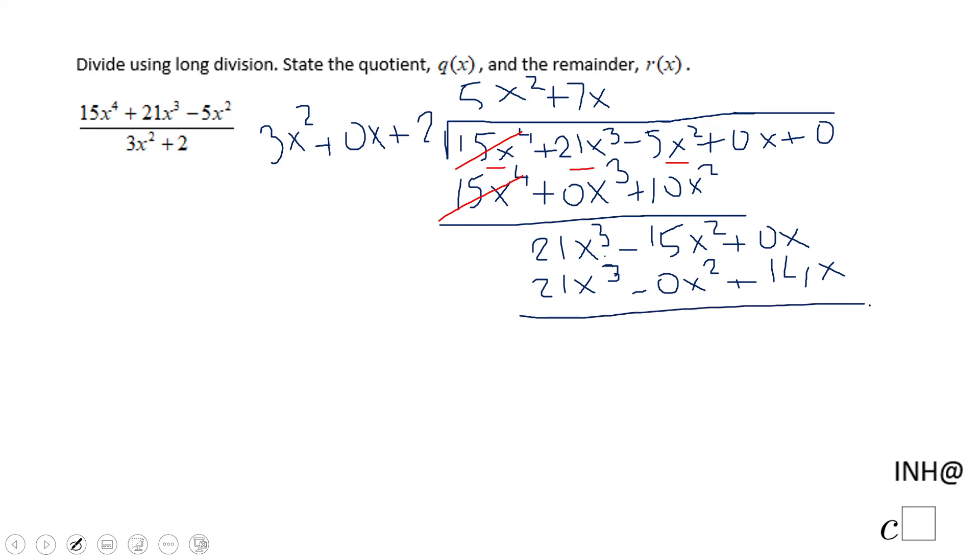And 7x times 2 is 14x. So the next thing is going to be, we're going to subtract. And let's see what we get. The first two terms cancel out, which is good. Negative 15x squared minus negative 0x squared. That is negative 15x squared.